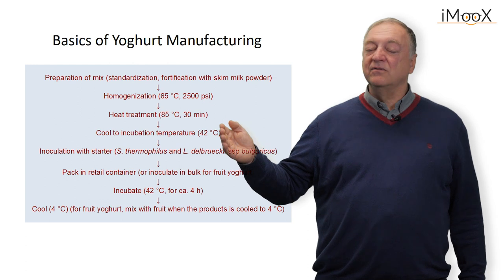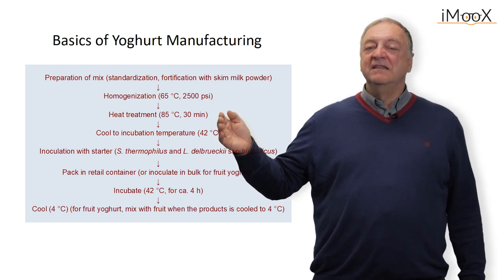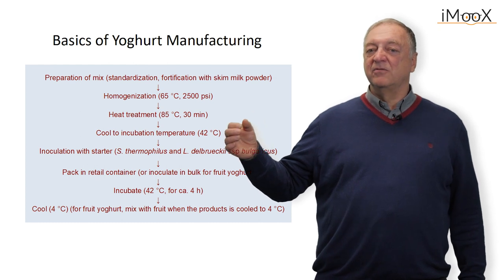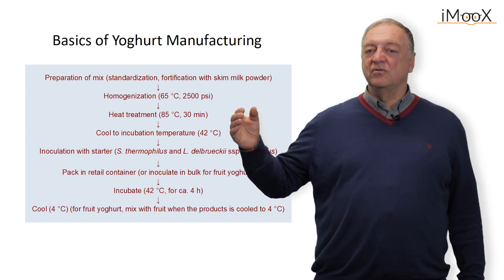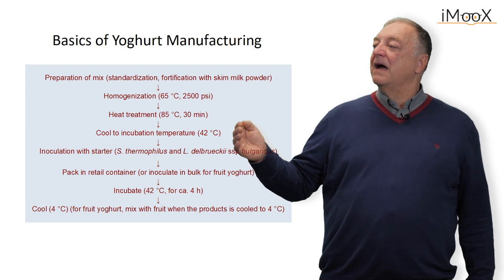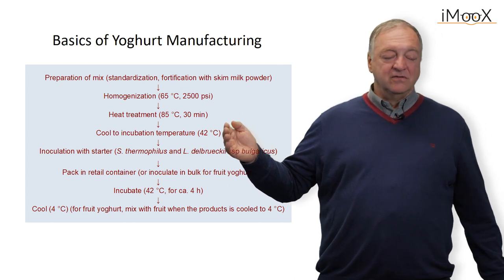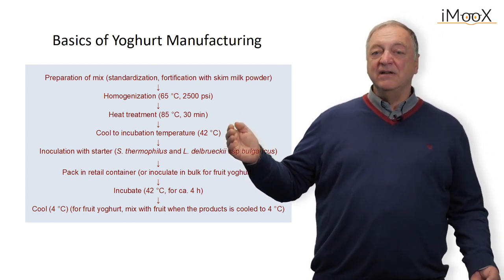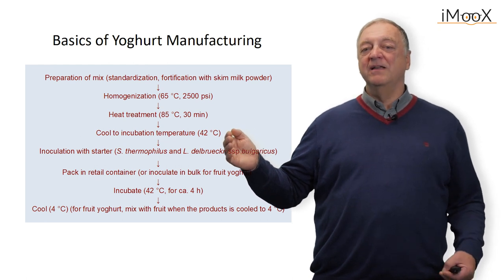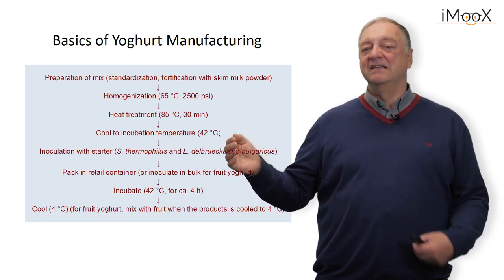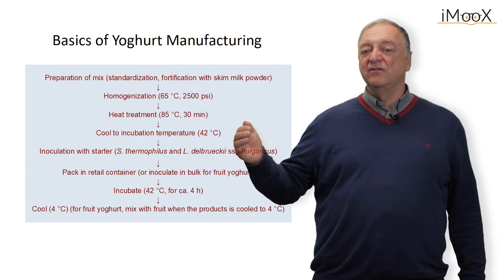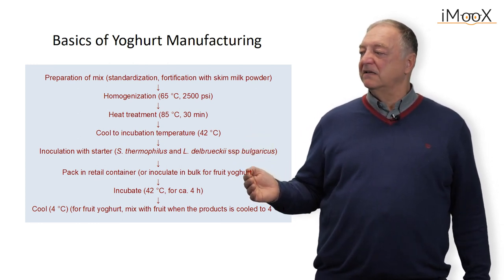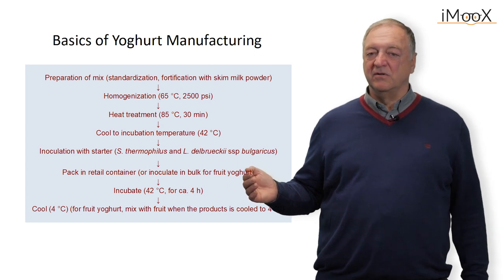After cooling down to 42 degrees, this milk is inoculated with the two species, Lactobacillus delbrueckii and Streptococcus thermophilus, and the fermentation is carried out either directly in the packaged food, or in bigger vessels and then transferred and stored into the food package where it is sold.